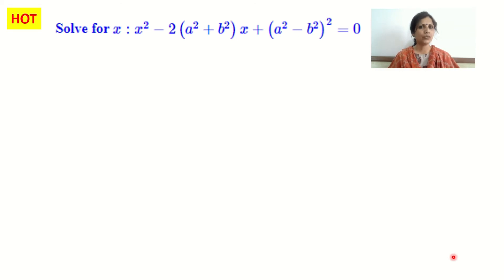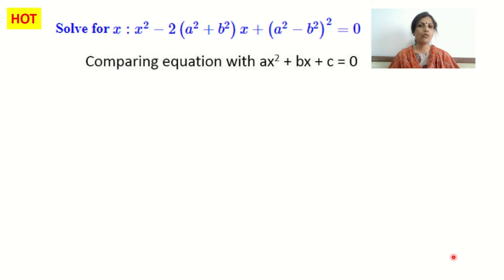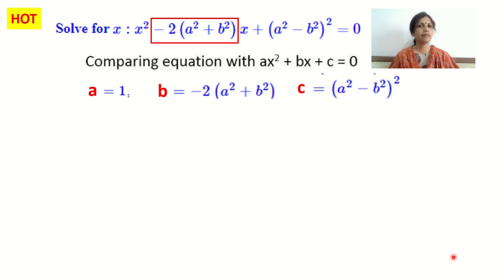The equation given is x squared minus 2 times a squared plus b squared times x plus a squared minus b squared the whole square, equals 0. Comparing with the standard form, this is clearly a quadratic equation. Here a equals 1, b equals minus 2 times a squared plus b squared, and c equals a squared minus b squared the whole square.